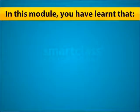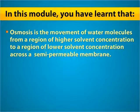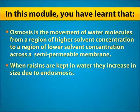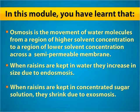In this module, you have learnt that osmosis is the movement of water molecules from a region of higher solvent concentration to a region of lower solvent concentration across a semi-permeable membrane. When raisins are kept in water, they increase in size due to endosmosis. When raisins are kept in concentrated sugar solution, they shrink due to exosmosis.